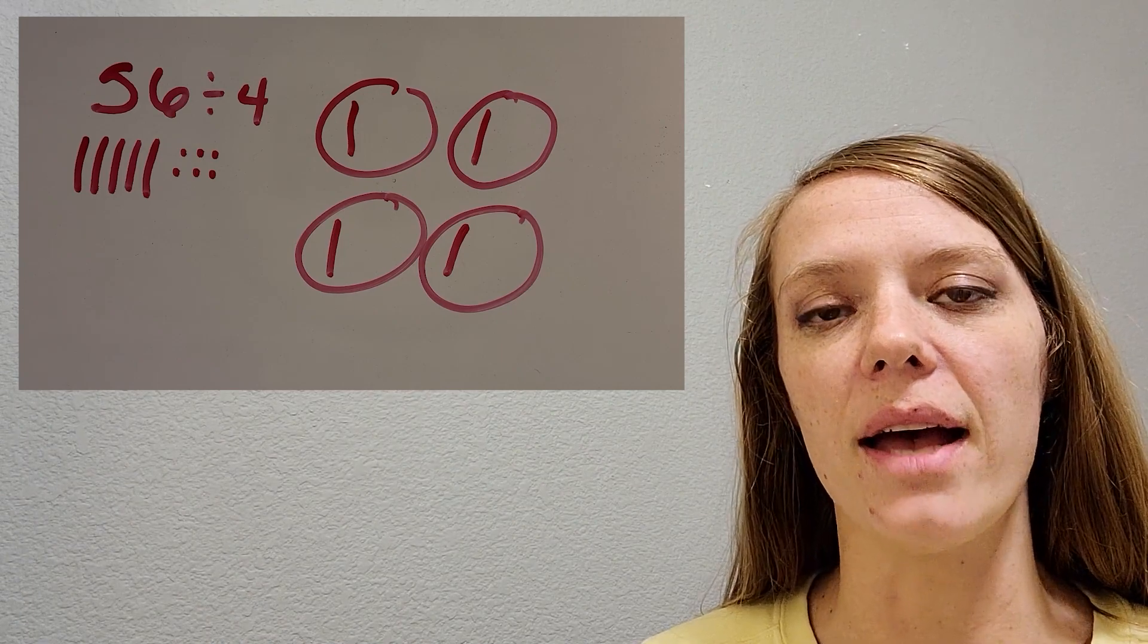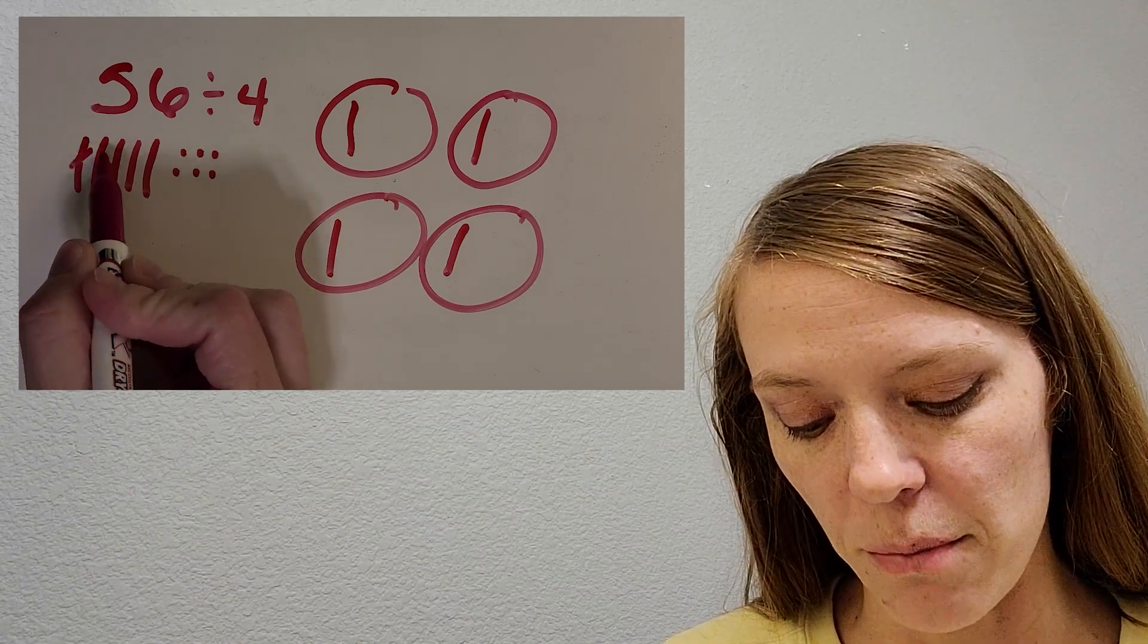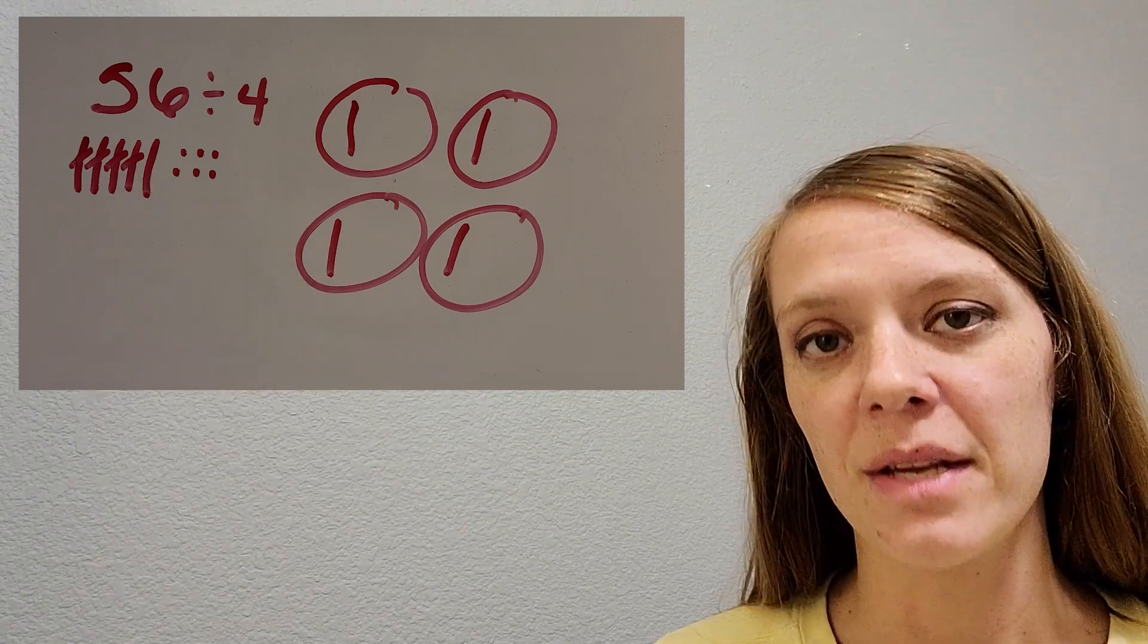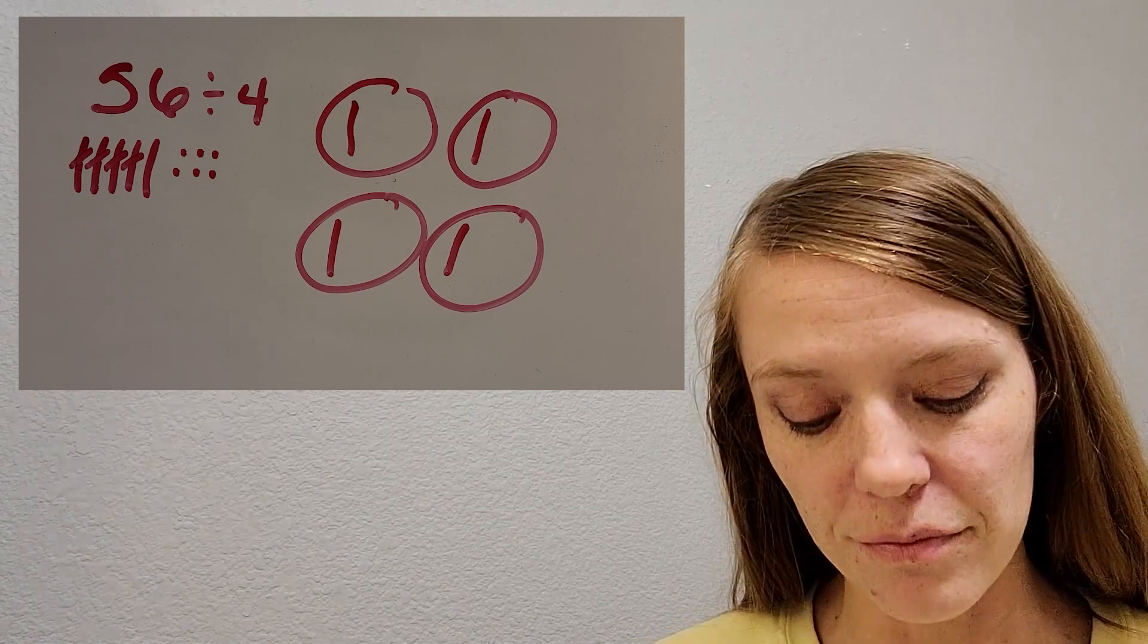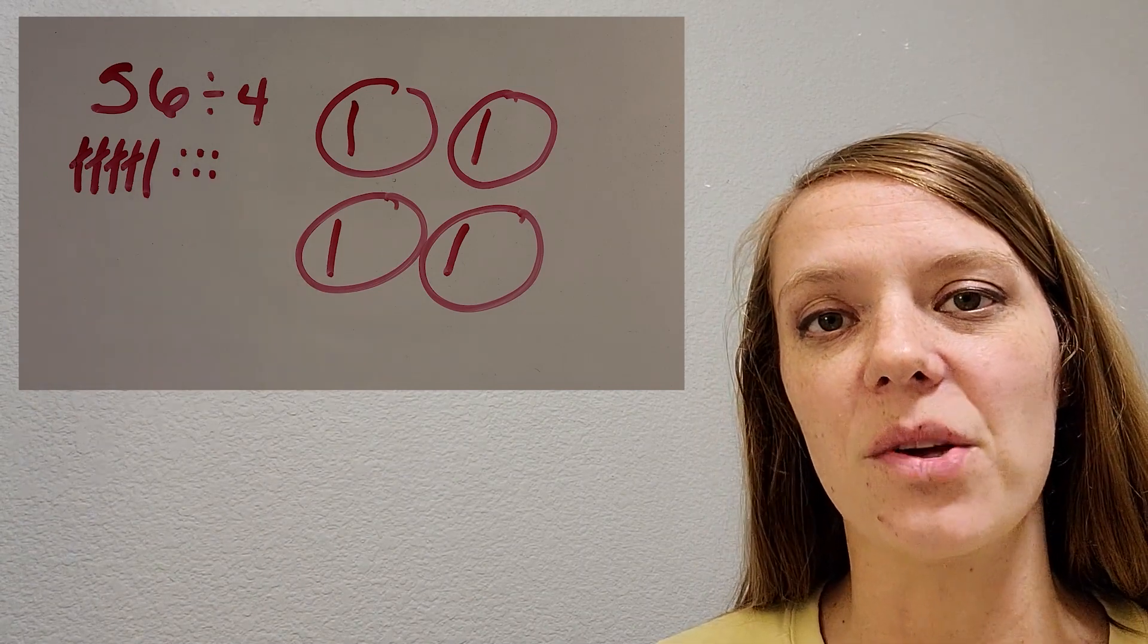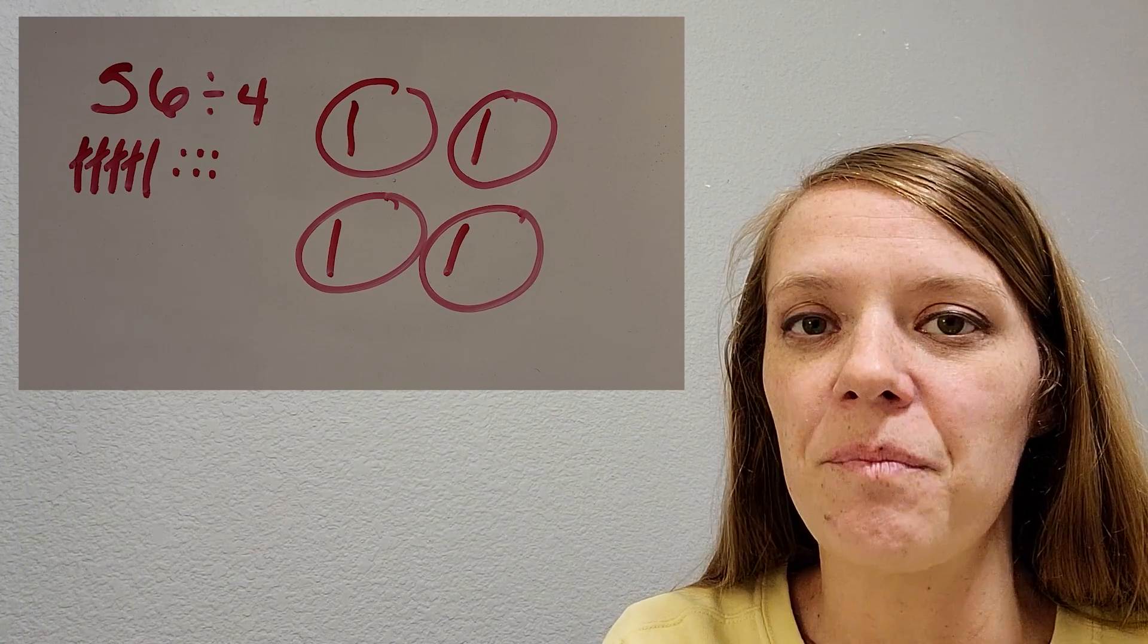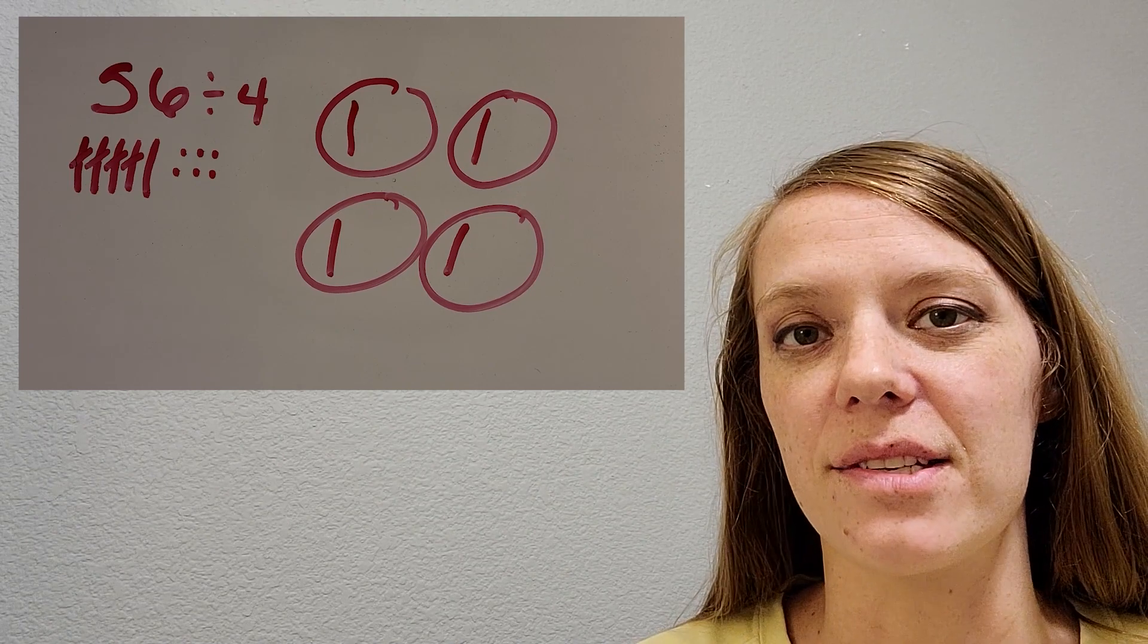So now that I've done that, I like to cross them out in my drawing of the dividend. So I'm going to go like this. One, two, three, four. Now I can see that I have one long left. So that's not enough to start giving the groups another long. And then I have six units left. So what do you think I could do with that long? I can't divide it equally. It wouldn't be fair. And so is there a way to break that up and be able to still divide it? What do you think?